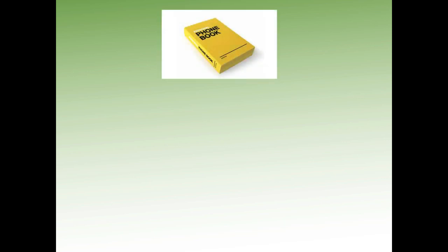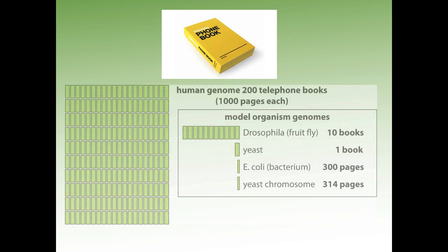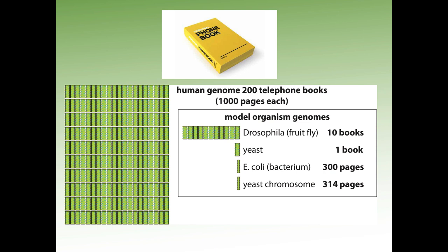Here's an analogy from my old postdoc advisor. Remember phone books — those giant, thick books you used to get? Imagine a phone book as our unit of measure. If we think about the human genome compared to other organisms, a bacterium's genome is going to be about 300 pages long, while a yeast chromosome is going to be about the same size as a whole E. coli genome — somewhere around three to six million base pairs.